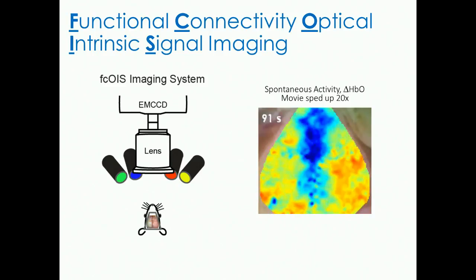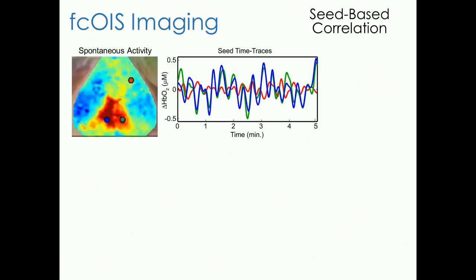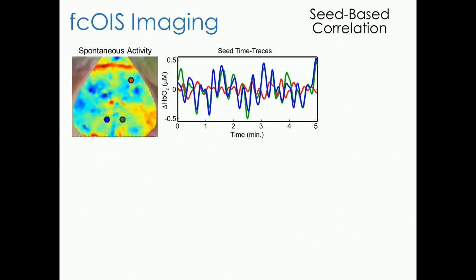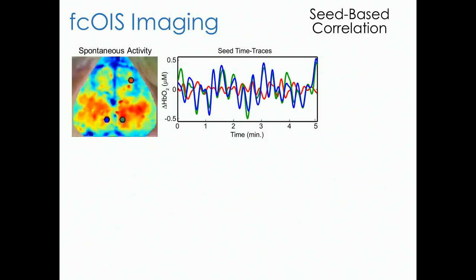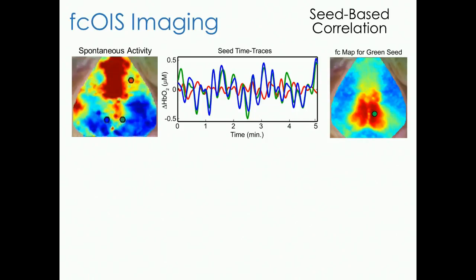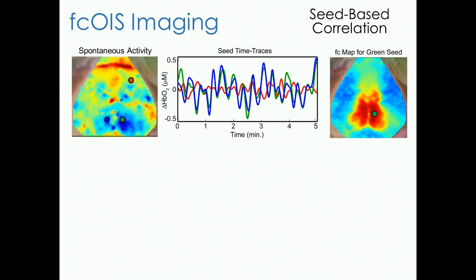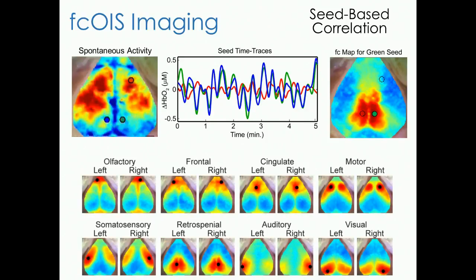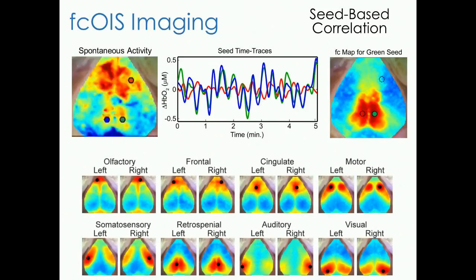We typically analyze these movies using seed-based approaches. With three regions, you have three time courses over a five-minute movie, and you can see immediately that the blue and green traces are very temporally coherent, doing something different than the red trace. If you take the green trace and correlate it with all other time courses within the brain, you generate a functional connectivity map for that green seed. You can do this for all regions within your field of view to generate topographical maps of the functional organization of the mouse brain.